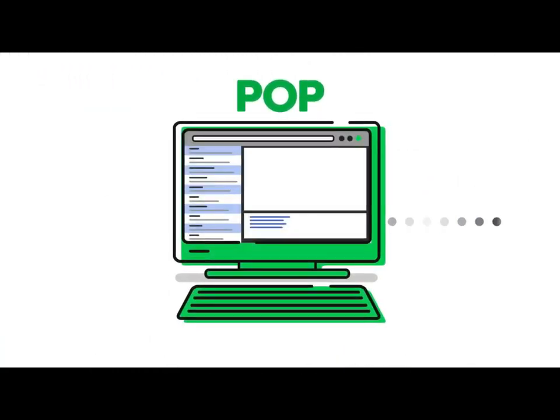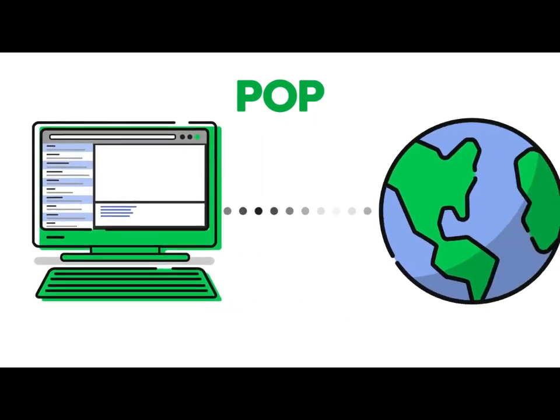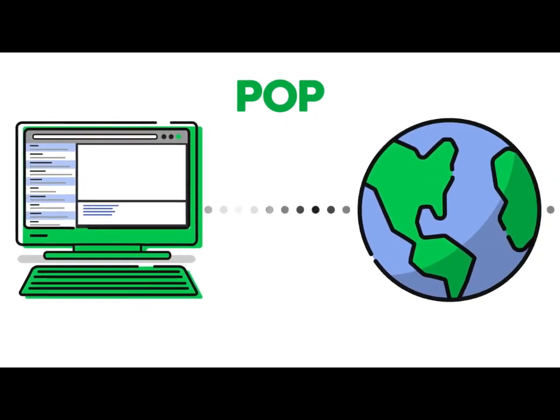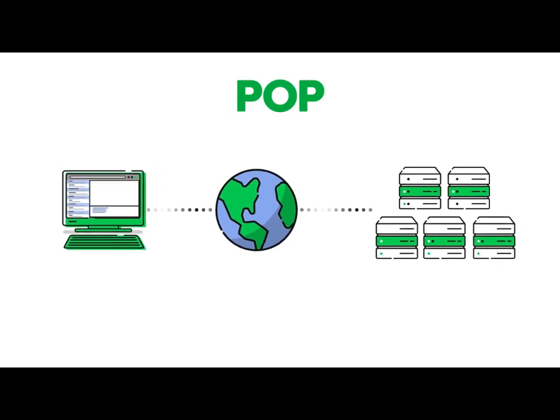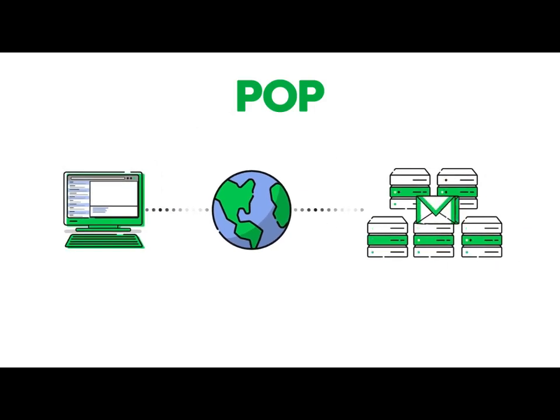Using POP, an internet-connected email client accesses a remote mail server, downloads all email to your local computer, and marks the messages for deletion on the email server.